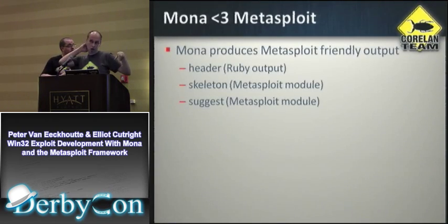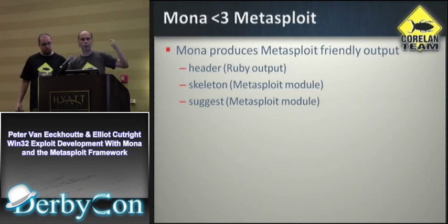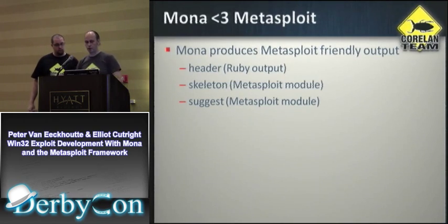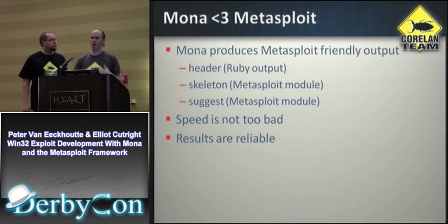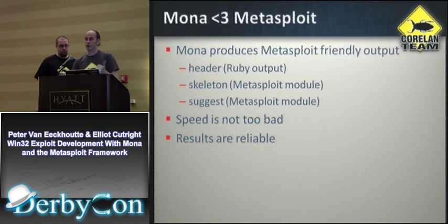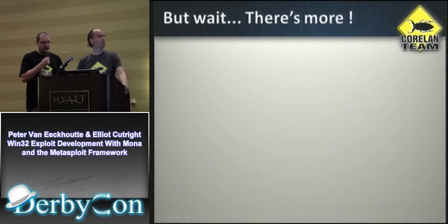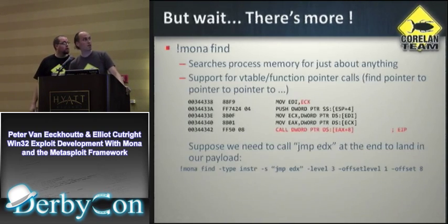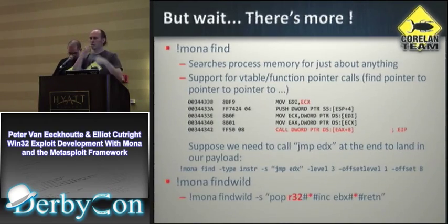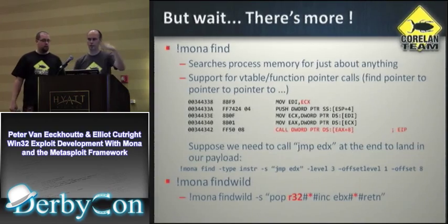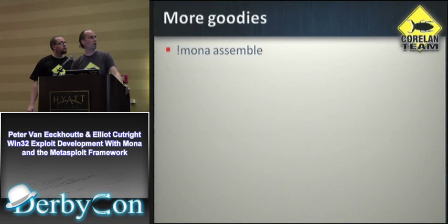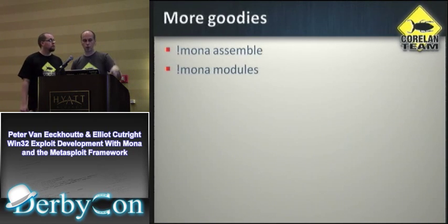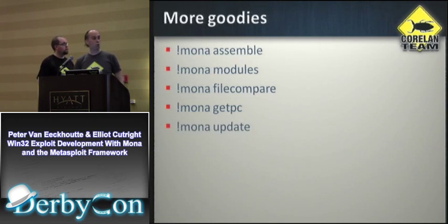Quick summary of what Mona does to help with building exploits for Metasploit. It provides Ruby output and tries to create Metasploit modules you can copy and paste into your installation. Speed is not too bad — the results and reliability of the results will be much better than doing it manually. It's actively maintained. There are also nice find functions for recursive searches for pointers that will help you write exploits for Vtable and function pointer overrides, the ability to assemble instructions to opcode, look at loaded modules and see all module properties.